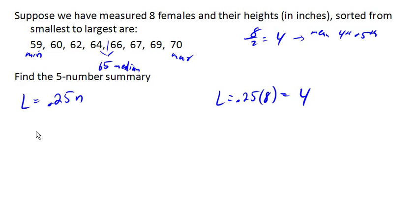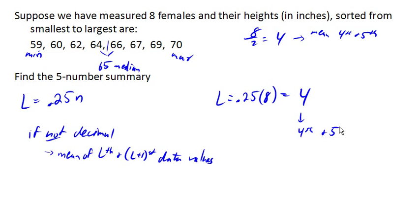So if this is not decimal, then we're going to basically run into the same thing we did with our median, where we're going to find the mean of the lth and l plus first data values. Which is a fancy way of saying, like if we come up with four here, then we're going to use the fourth and fifth. So this value is going to give me the first one to use, and then we also use the next one in the list. And wow, I did not calculate that right. I'm sorry.